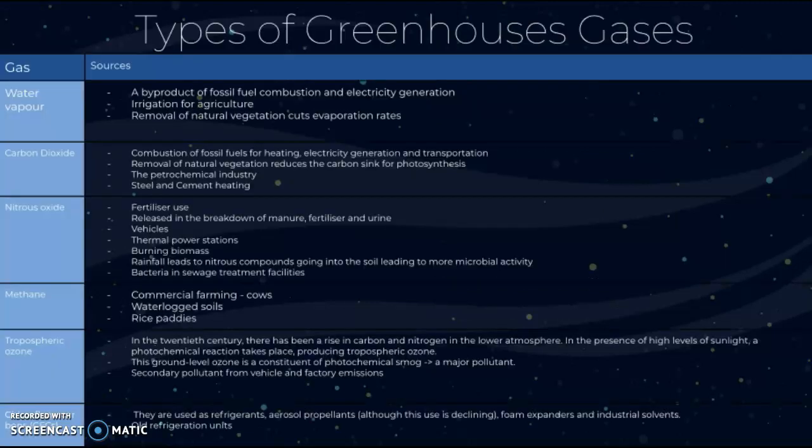Now, what are the types and sources of greenhouse gases? We have water vapor, which is a byproduct of fossil fuel combustion and electricity generation, irrigation for agriculture, removal of natural vegetation — as this reduces the carbon sink for photosynthesis — the petrochemical industry, and steel and cement heating processes.